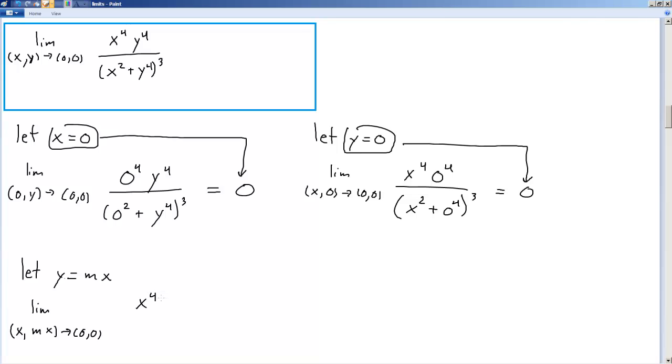And then we just fill in the blanks. So we have x to the fourth, mx to the fourth. All of this is going to be over x squared plus, and then we're going to have mx to the fourth, because that's what our y is going to be. And all of this is going to be cubed. So, at this point we need to do a little bit of algebra to simplify things.